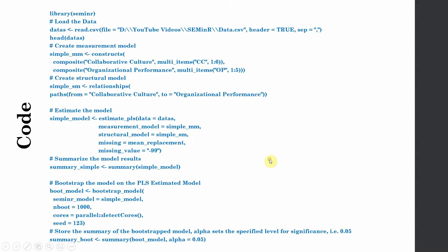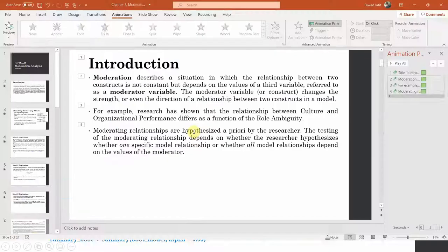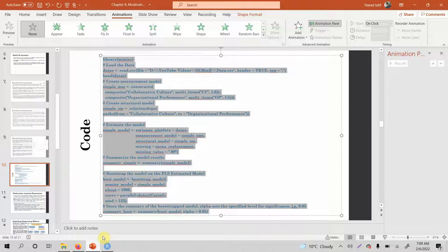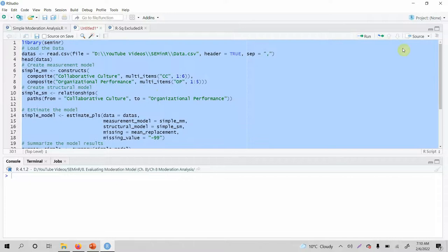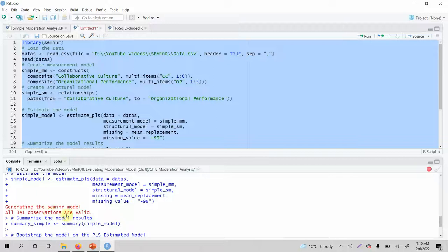Now let's look at what we have done up to this point: loading the library, creating our measurement model, estimating the model, and bootstrapping. We are not going to go into detail of this because we have already covered it. We are now going to use this code to create our moderating effect. Let's copy this code and run it — all observations were valid.